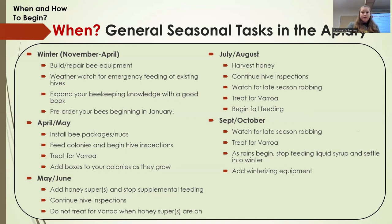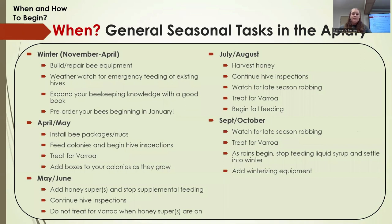In September and October, watch for late-season robbing again. Towards the end of October when the rains start, robbing pressure will really lay off. You'll stop feeding liquid syrup because as the rains start, it'll be too moist — bees can't consume liquid sugar syrup in the wintertime. Winterizing equipment is covered in a separate free class, happening around October.